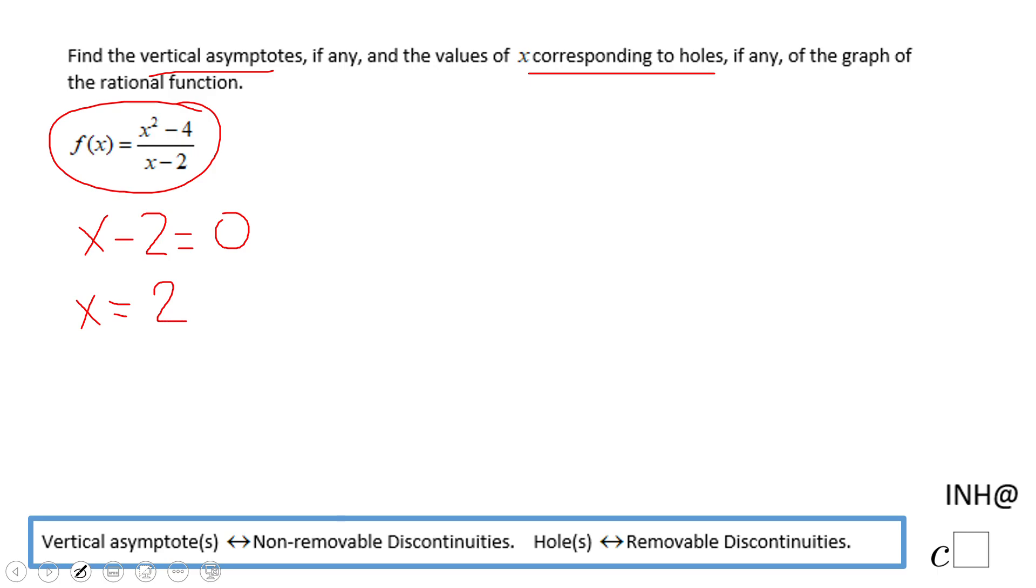Now we need to find out if it's removable or non-removable. So we're going to go back to f of x and we're going to look and see if we can factor out anything here. And yes we can factor out x squared minus 4, that is x minus 2 times x plus 2, that's the difference of squares, over x minus 2. And if you notice now the x minus 2 cancels out.